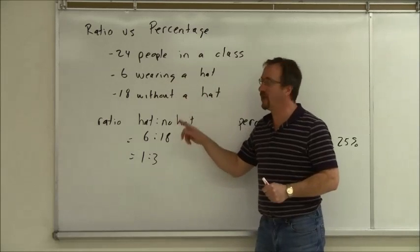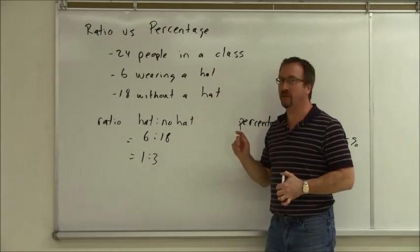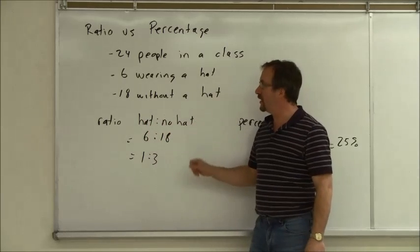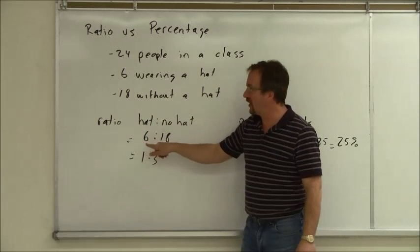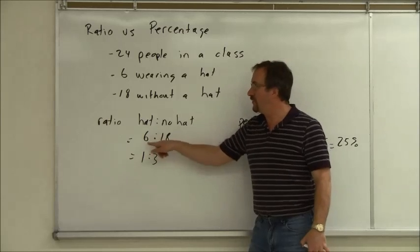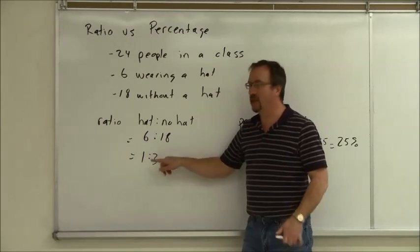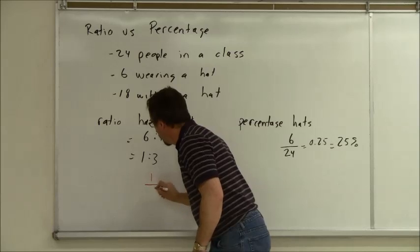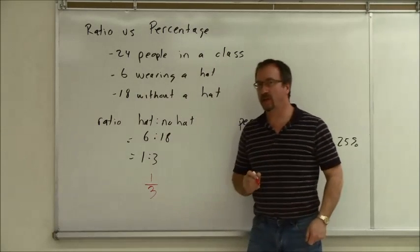So if I've got 6 people wearing a hat and 18 people without a hat, the ratio of hats to no hats is 6 with hats to 18 without. I can divide both those sides by 6 to give me a 1 to 3 ratio. Remember that we could also write that as 1 to 3.